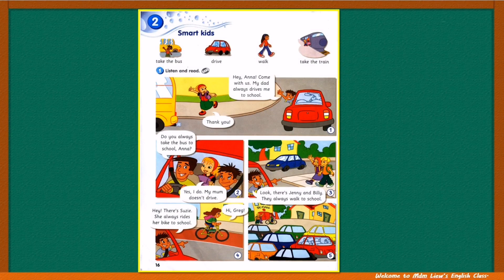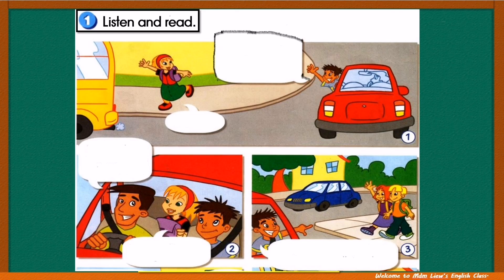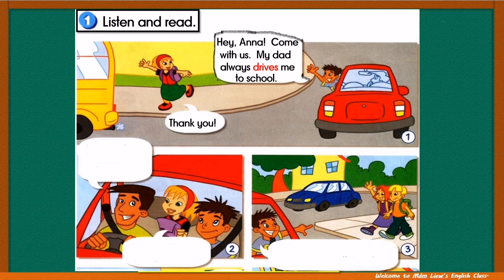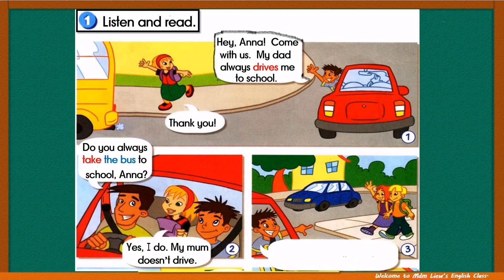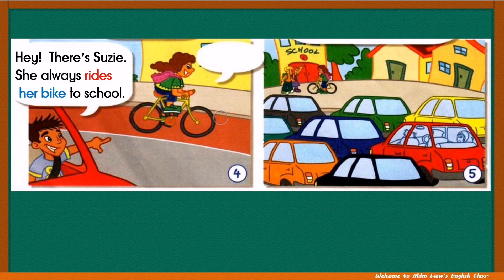Take out your textbook and turn to page 16. Let's listen and read together. Activity 1, listen and read. "Hey Anna, come with us. My dad always drives me to school." "Thank you. Do you always take the bus to school, Anna?" "Yes, I do. My mum doesn't drive." "Look, there's Jenny and Billy. They always walk to school." "Hey, there's Susie. She always rides her bike to school. Hi Greg."